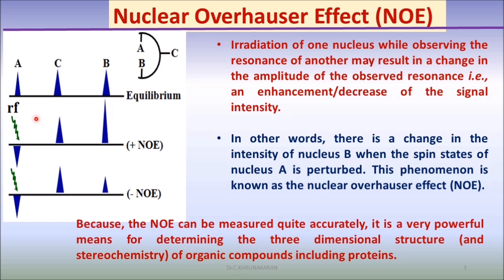When using the double resonance technique, when proton A is irradiated, there is a change in the intensity of the NMR peak of B, because A and B are close to each other.